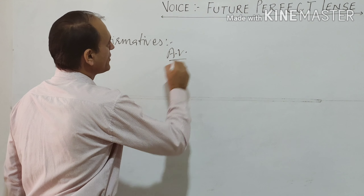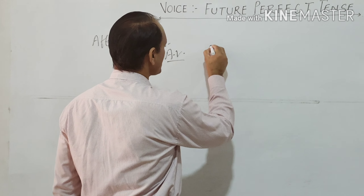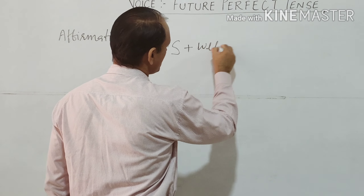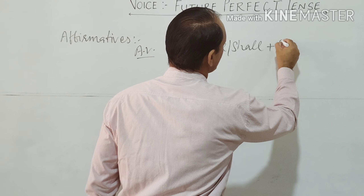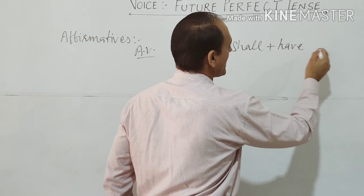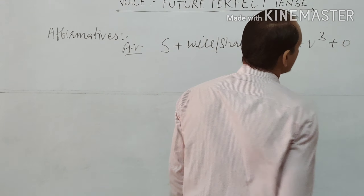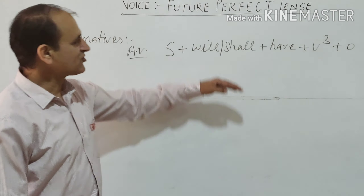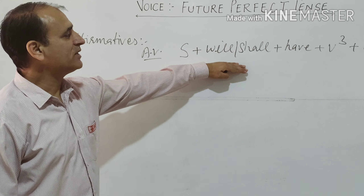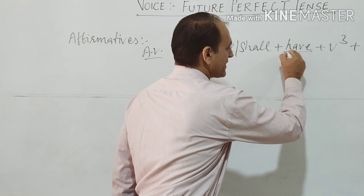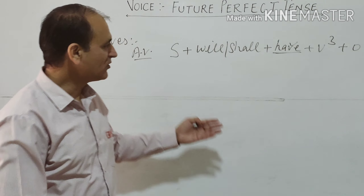In future perfect tense, an affirmative sentence in active voice becomes: subject, followed by will or shall, then we use have, followed by the third form of the verb, and then object. This is the structure of future perfect tense in an affirmative sentence. We have to keep one thing in mind: in future perfect tense we always use have.